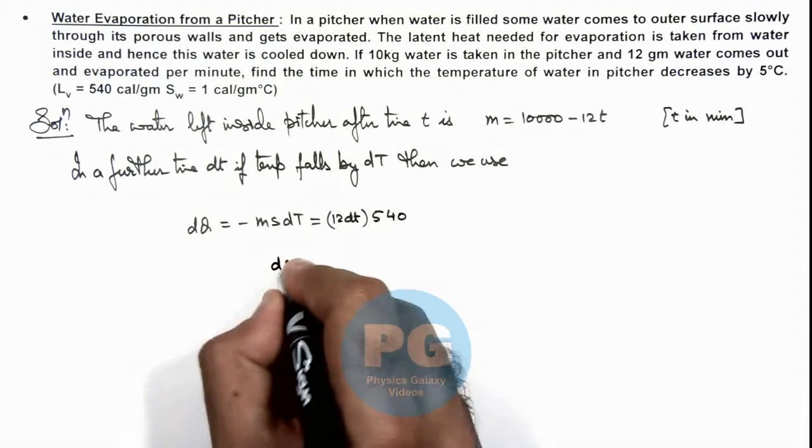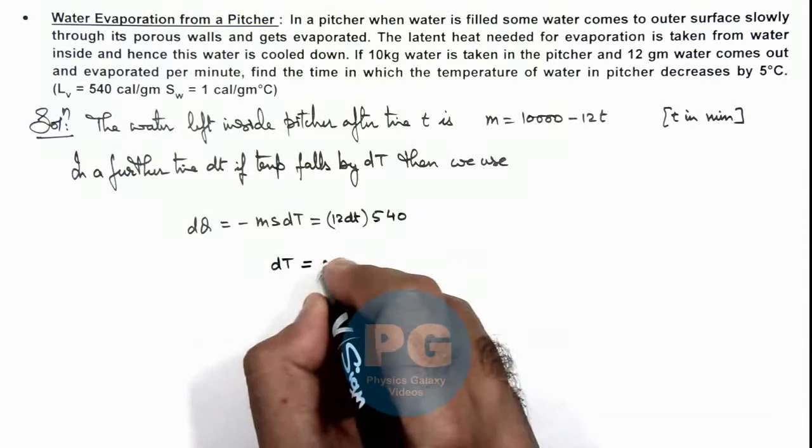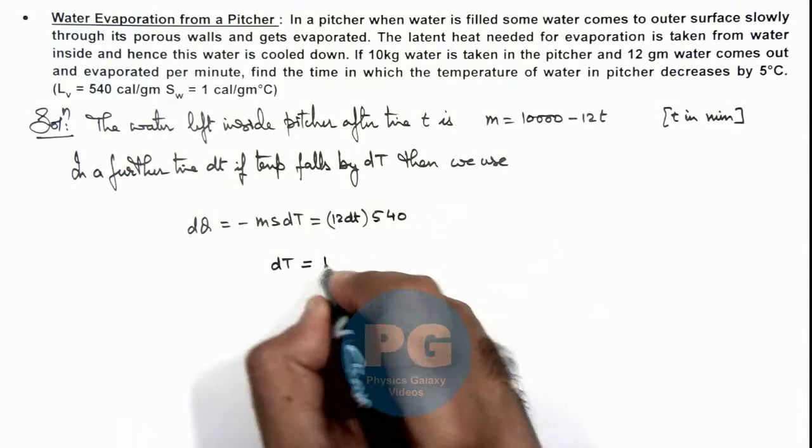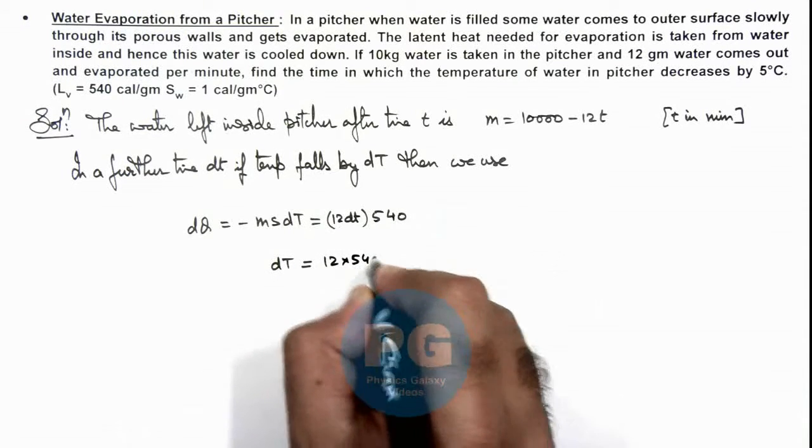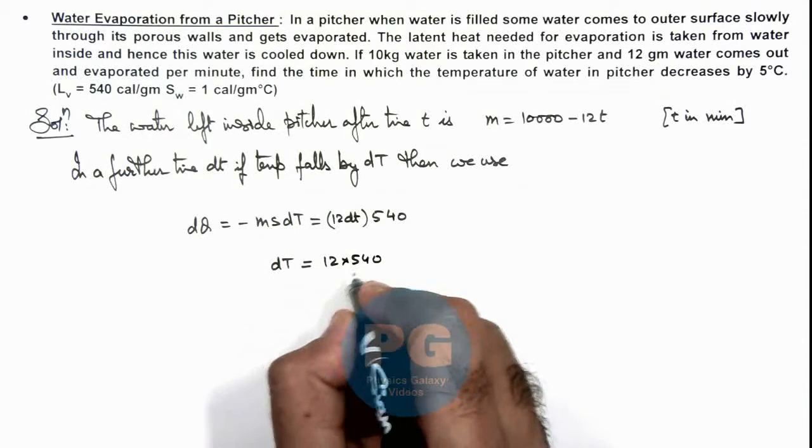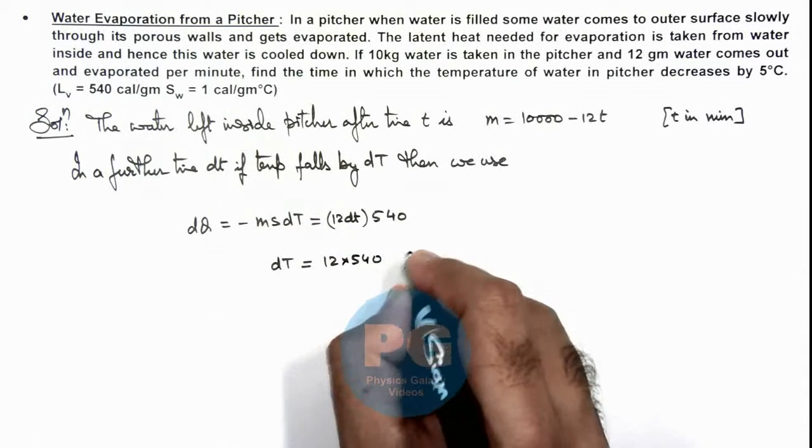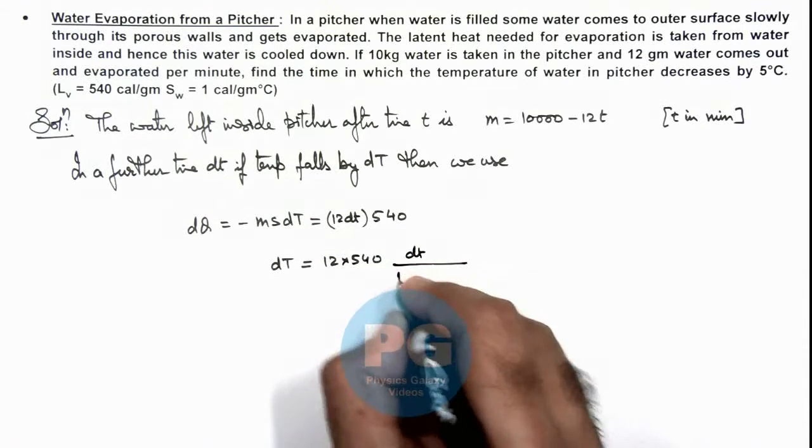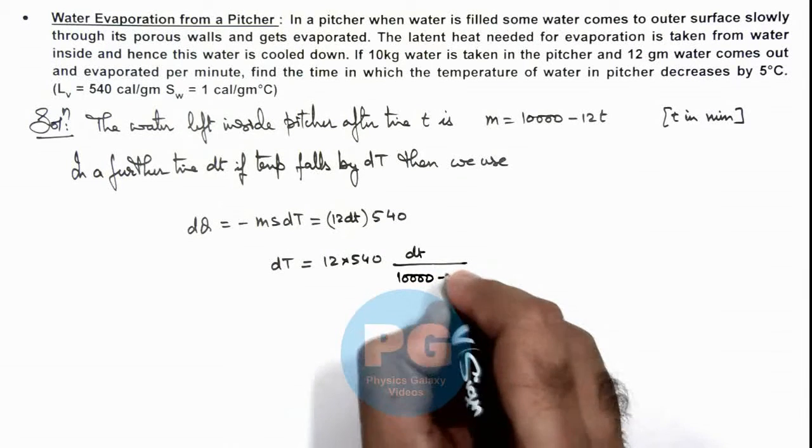So this gives dT is equal to, and we can write here 12 multiplied by 540, and specific heat we can take as 1, so this is dT divided by 10,000 minus 12t.